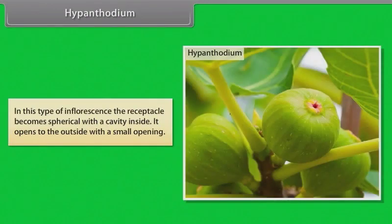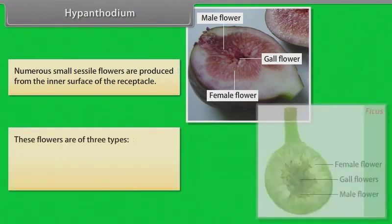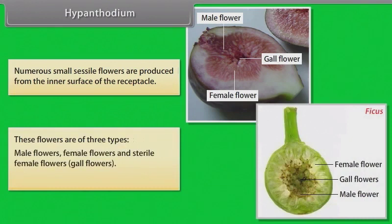In hypanthodium, the receptacle becomes spherical with a cavity inside and opens to the outside with a small opening. Numerous small sessile flowers are produced from the inner surface of the receptacle. These flowers are of three types: male flowers, female flowers, and sterile female flowers (gall flowers). Example: Ficus.